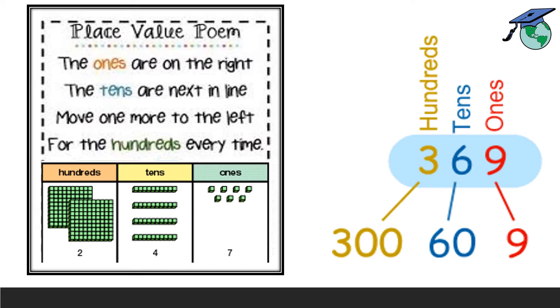Place value poem. The ones are on the right. The tens are next in line. Move one more to the left for the hundreds every time. 9, 6, 3. That is, 369. 9 in ones place will be 9, 6 in tens place will be 60, and 3 in hundreds place will be 300.